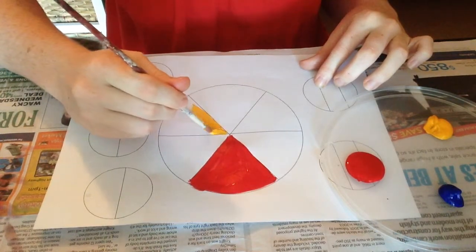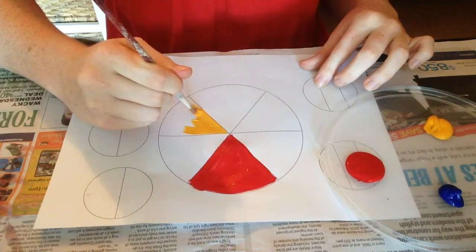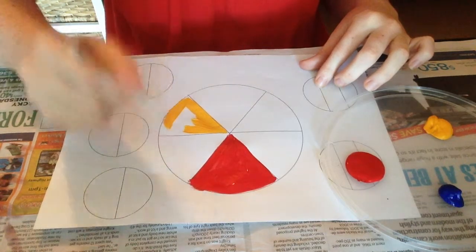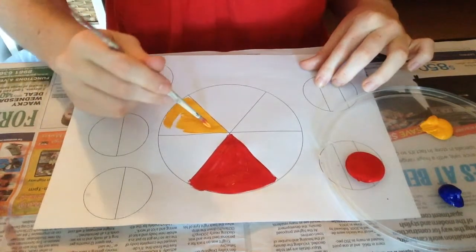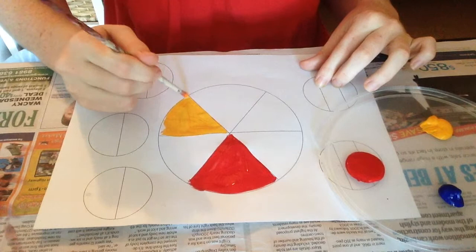Now I've put some newspaper down on my table so my table doesn't get dirty. And I've also got something to wipe my brush with once I finish painting to get the extra water off.